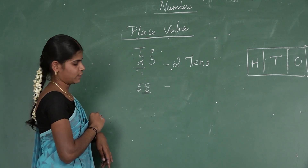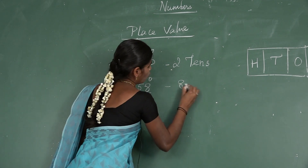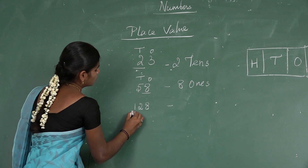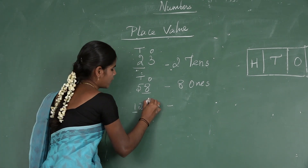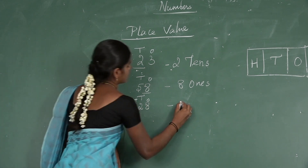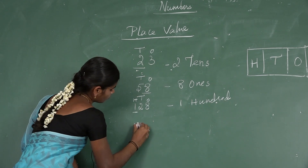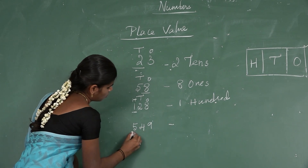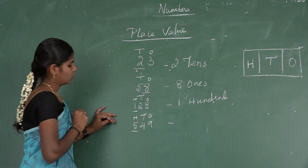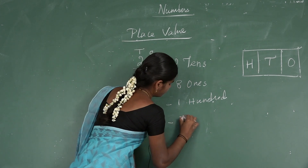Next example — 58. What is the place value of 8? Starting from 1s, 10s, and 100s — the digit 8 is in the 1s position. Next example — 549. Write the place value of 5. Starting from 1s, 10s, 100s — the digit 5 is in the 100s position. So the place value of 5 is 5 hundreds, which equals 500.